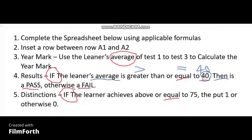Now that it's E3, you write that in. So it's: IF E3 is greater than or equals to 40, then it's a pass — that is statement number one. After the first comma is statement number two, and after the second comma is statement number three. Statement one says IF E3 is greater than or equals to 40; statement two says it's a pass; statement three says otherwise it's a fail.